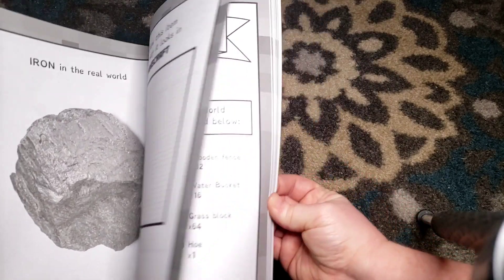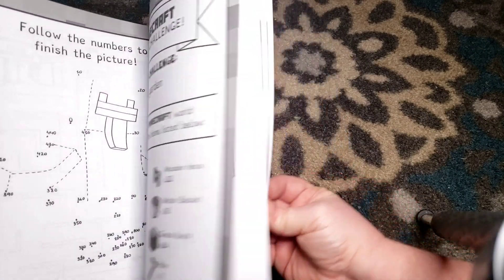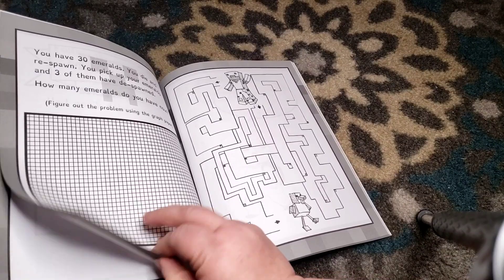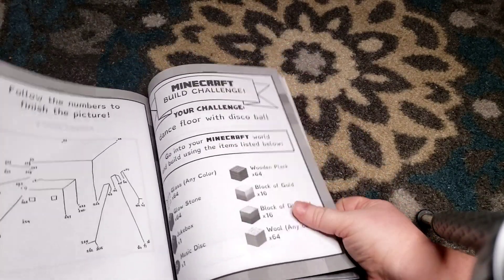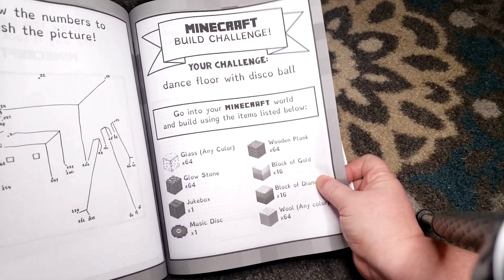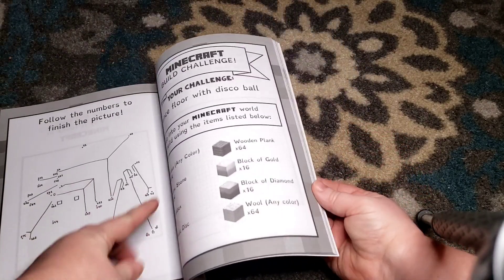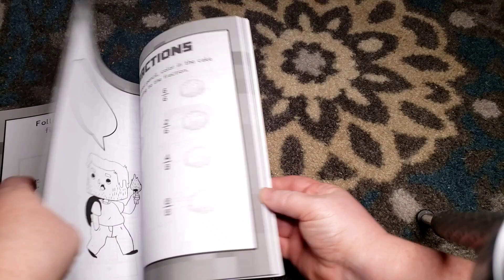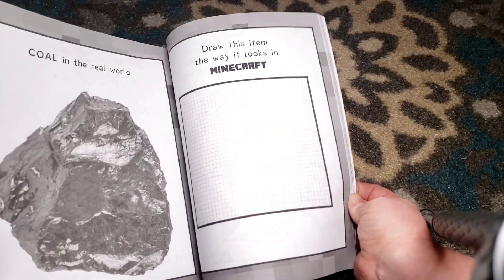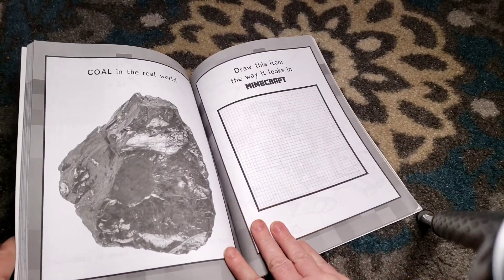My kids were really excited when they saw this because they really like the ones that they're doing now. Here's another challenge: dance floor with disco ball. That's pretty cool. There's a dot-to-dot on the other side. That's really what's inside of here. I just wanted to make this quick video today just to show you this so that you might have an opportunity to see what's inside of it.